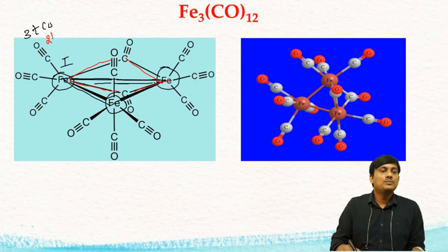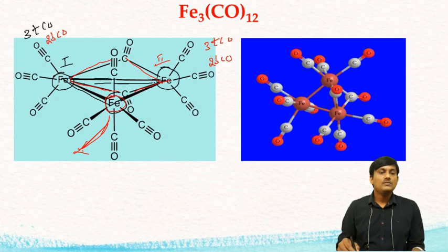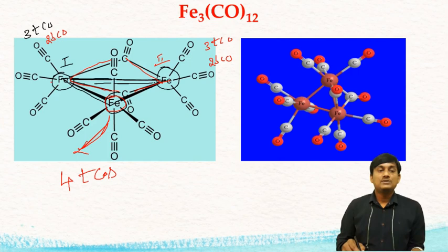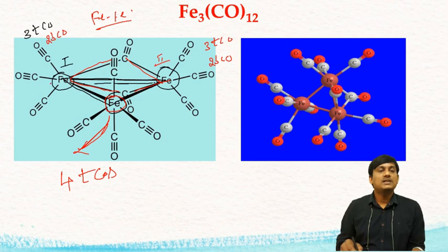The second iron also has 3 terminal COs and 2 bridged COs. The third iron has 4 terminal COs. There are metal-metal bonds between Fe1-Fe2, Fe2-Fe3, and Fe1-Fe3, giving 3 metal-metal bonds total.